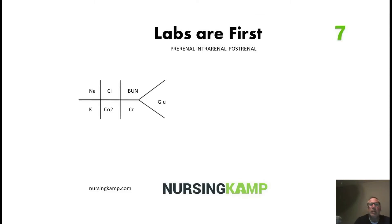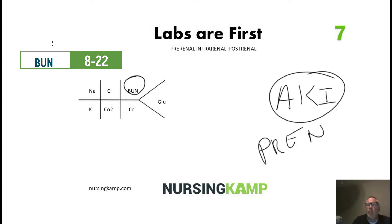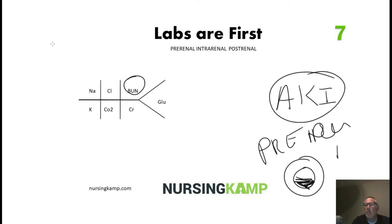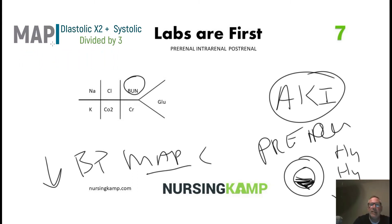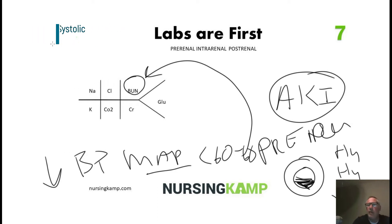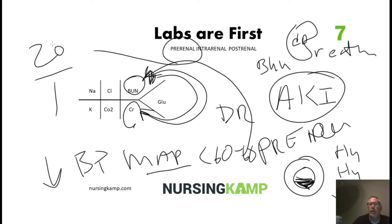Let's look at lab assessment more closely. For a pre-renal failure patient, the problem is before the kidney — hypovolemia or hypotension. We assess the mean arterial pressure; if it's less than 60-65, that's going to affect the BUN and creatinine. If BUN is elevated but creatinine is normal, the patient is 'dry' — this is called 20 over 1, indicating pre-renal failure.